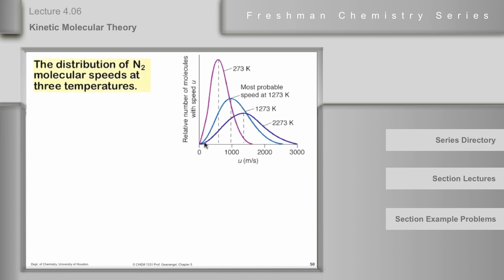Also notice that the distribution gets wider as the temperature gets higher. It's sort of sharp at zero degrees Celsius, and then it gets a little wider and a little wider.